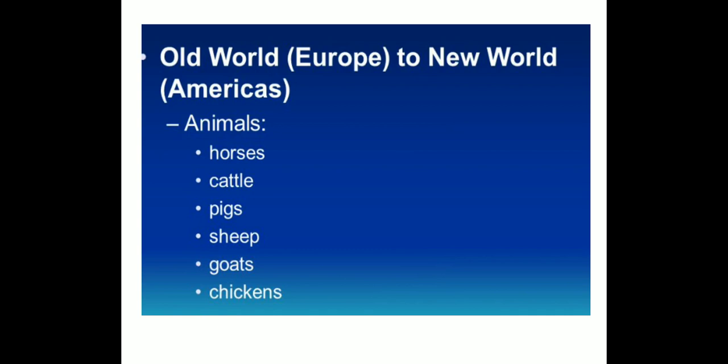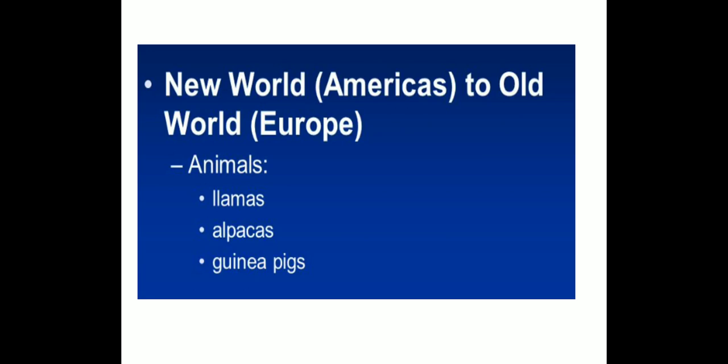In terms of animals, from old world to new world, horses, cattle, pigs, sheep, goats, and chickens were introduced to the new world from the old world. And from the new world to the old world, llamas, alpacas, and guinea pigs were introduced. So these were native to the new world.